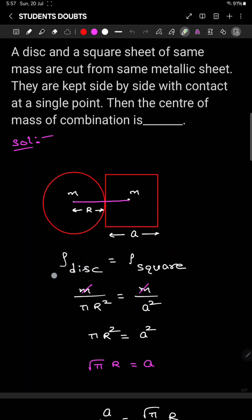Areal density of the disc formula mass by area. Areal density of the square formula mass by area.